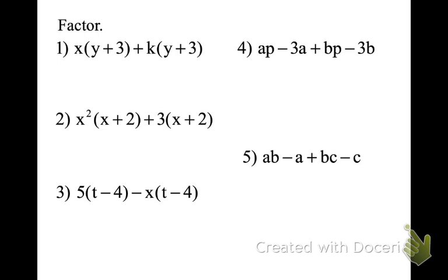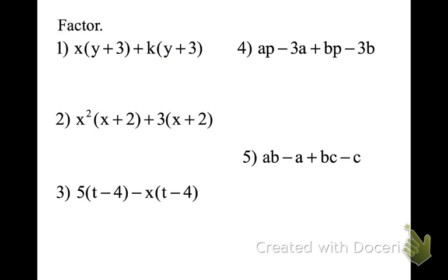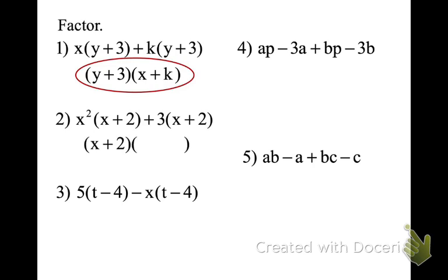Let's take baby steps. Number one: we have two terms. We can factor out the binomial factor of y plus 3, and then what's left is x plus k in the parenthesis. For number two, we factor out x plus 2, and what's left is x squared plus 3. Number three: we factor out t minus 4, and what's left is 5 minus x.